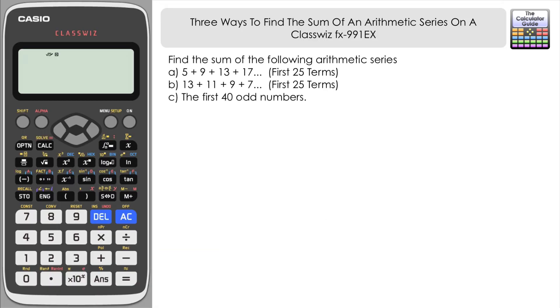We have three different arithmetic series. For the first two series, we need to find the sum of the first 25 terms. For the last series, we need to find the sum of the first 40 odd numbers. We're going to look at three different approaches for finding the sum of these arithmetic series.